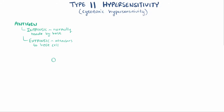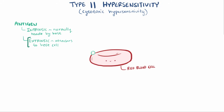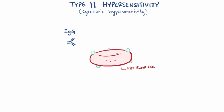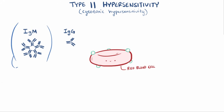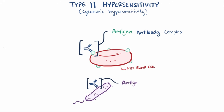For example, if a drug like penicillin binds to a red blood cell, it becomes an extrinsic antigen. An IgG, or more rarely an IgM antibody that's penicillin-specific might bind to the penicillin molecule, creating an antigen-antibody complex. It's worth mentioning that antigen-antibody complexes can happen in the course of a normal infection, but it's when an antibody is complexed to host tissue that things start to become a problem.